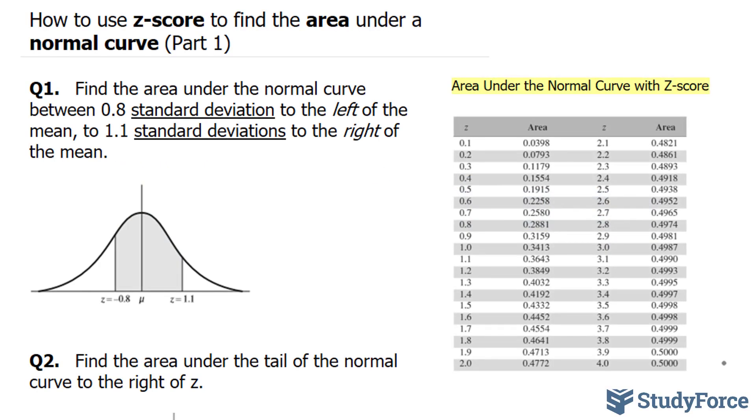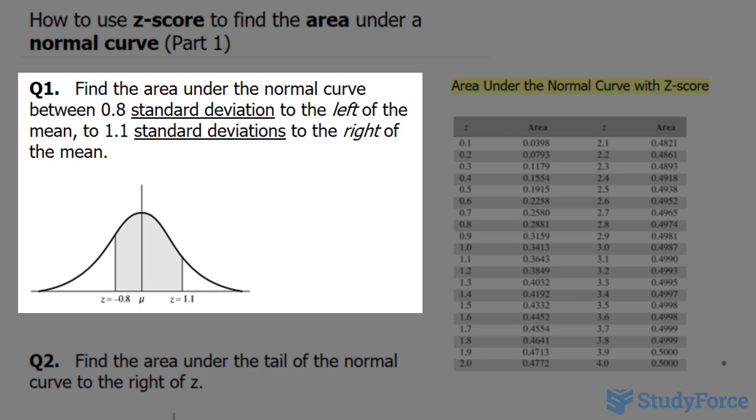In this video, I'll show you how to use z-score to find the area under a normal curve. This is part one. Question one reads, find the area under the normal curve between 0.8 standard deviation to the left of the mean to 1.1 standard deviation to the right of the mean.